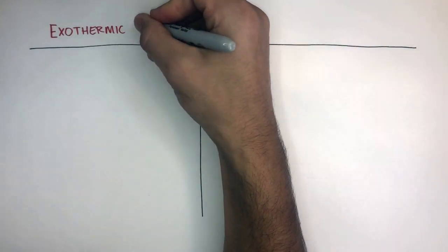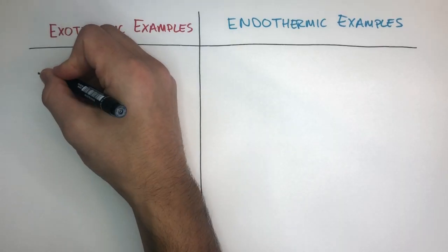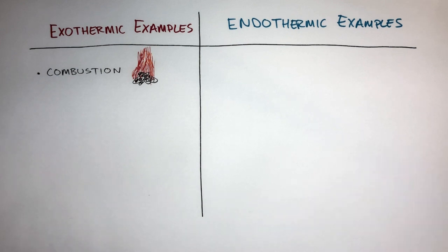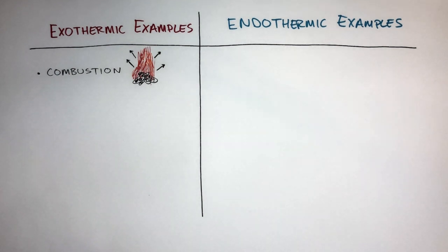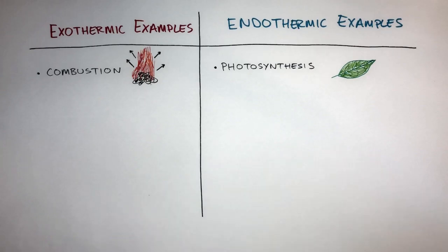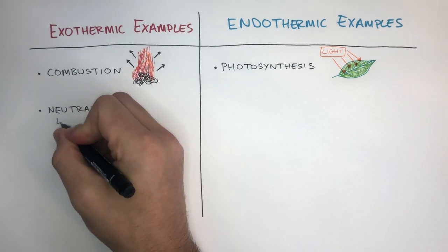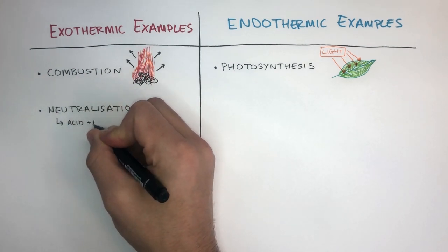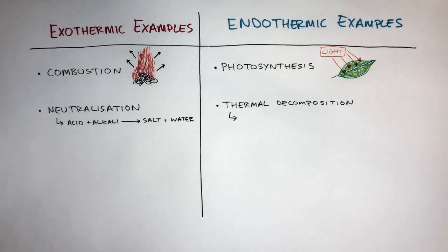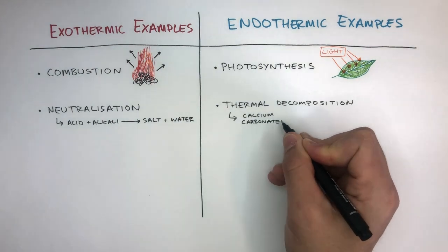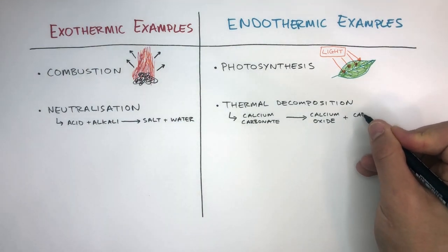We will now make a simple table comparing exothermic examples and endothermic examples. Combustion is an exothermic reaction because it releases a lot of energy into the surroundings, causing the temperature to increase. Photosynthesis is an endothermic reaction because it takes in light energy from the surroundings. Neutralization is an exothermic reaction, which is where an acid reacts with an alkali to form a salt and water. Thermal decomposition is an endothermic reaction, such as when calcium carbonate is broken down into calcium oxide and carbon dioxide.